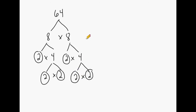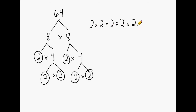At this point we can express our answer a couple of different ways. We have six 2's that we circled, so we may write 2 times 2 times 2 times 2 times 2 times 2 as our answer. Or we may write this in exponential notation, which would be 2 to the 6th power. We would say that 2 to the 6th power is the prime factorization of 64.